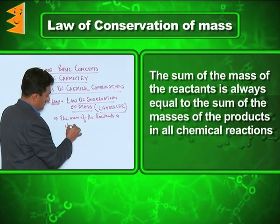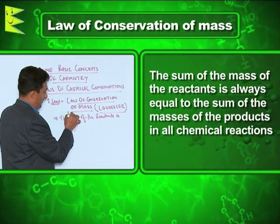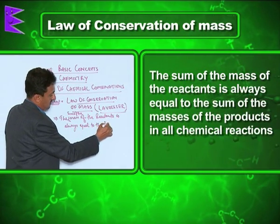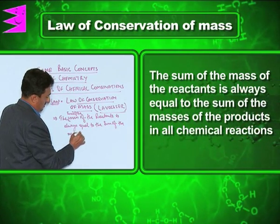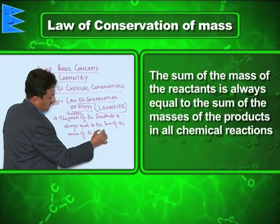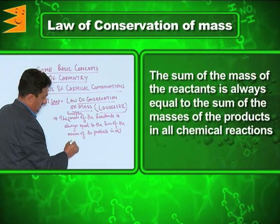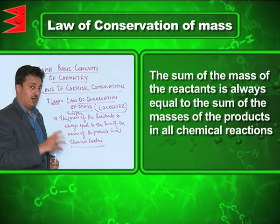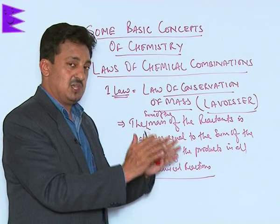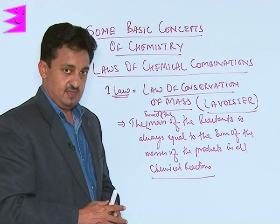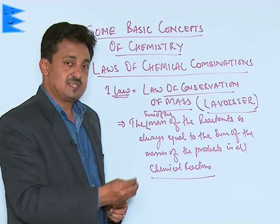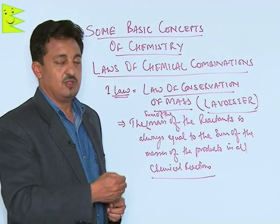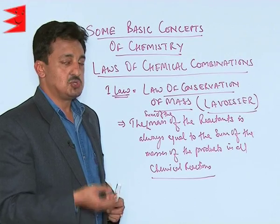The law states that the mass of the reactants is always equal to the sum of the masses of the products in all chemical reactions. The mass can neither be created nor destroyed, so whatever mass of reactants we take will always be equal to the mass of the products — no atoms or molecules are lost, so the masses always remain the same.